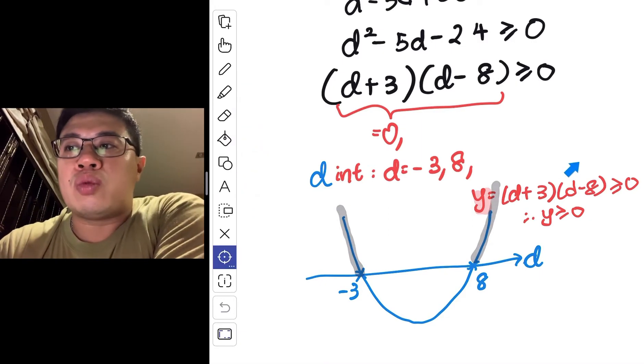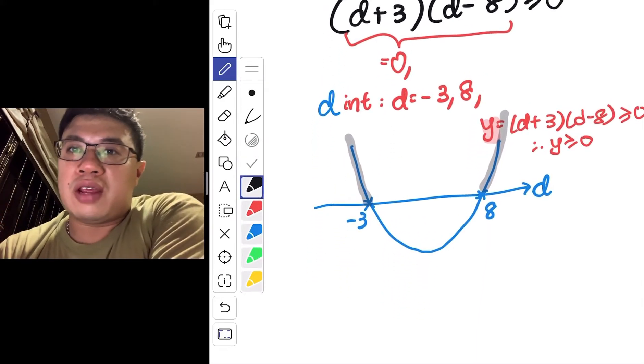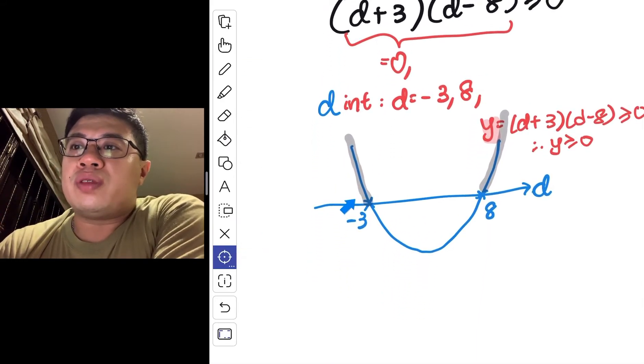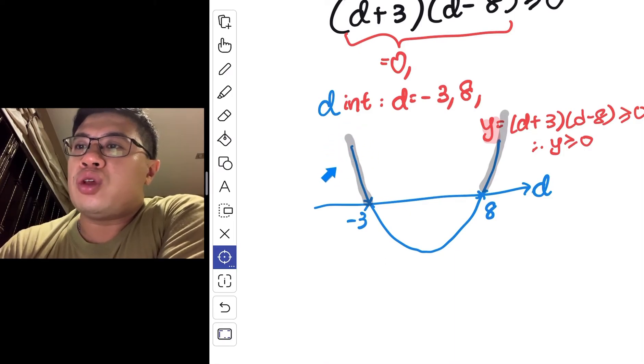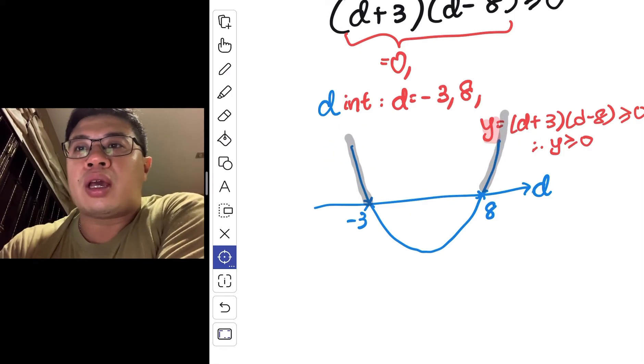And solving this will mean that we are not just shading the graph, but you need to deliver the values of d that will give you this gray area here.